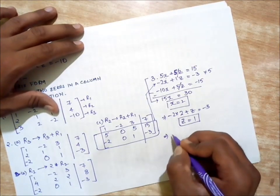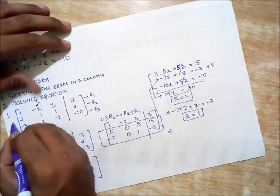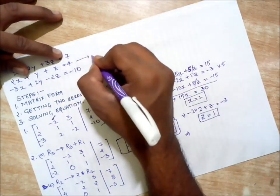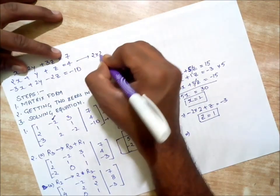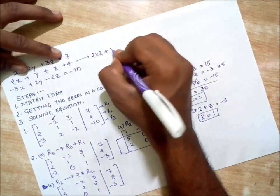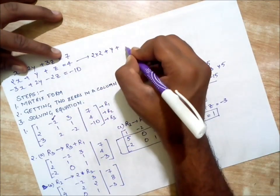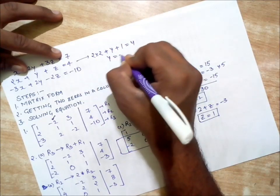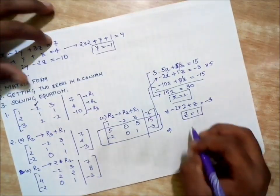If I take this equation, 2 times -2 is -4, and -4 plus Z equals -3, which implies Z equals 1. If I take any of these equations, using X equals 2, then solving for Y, we get Y equals -1. So we got the value of Y as -1.